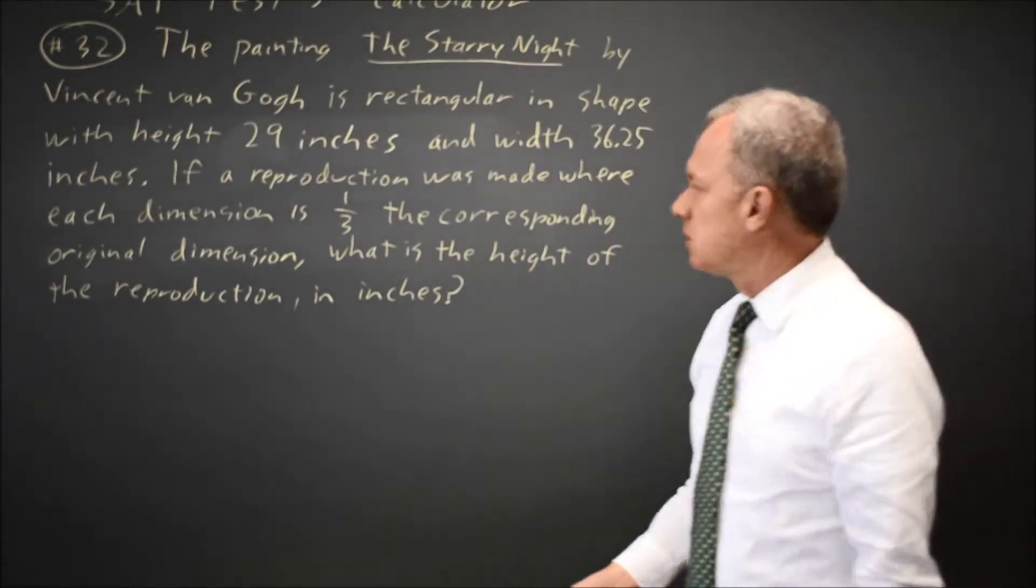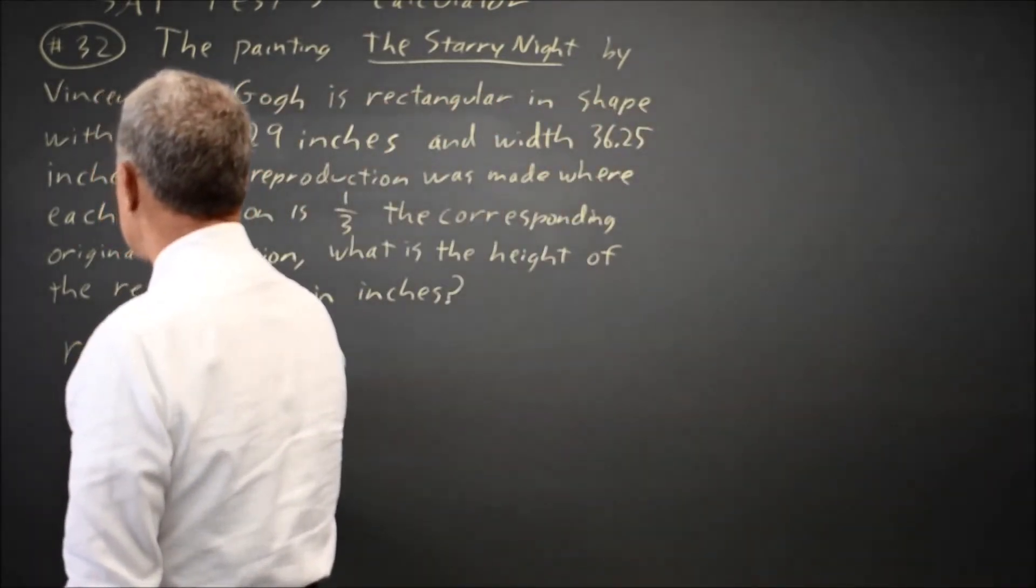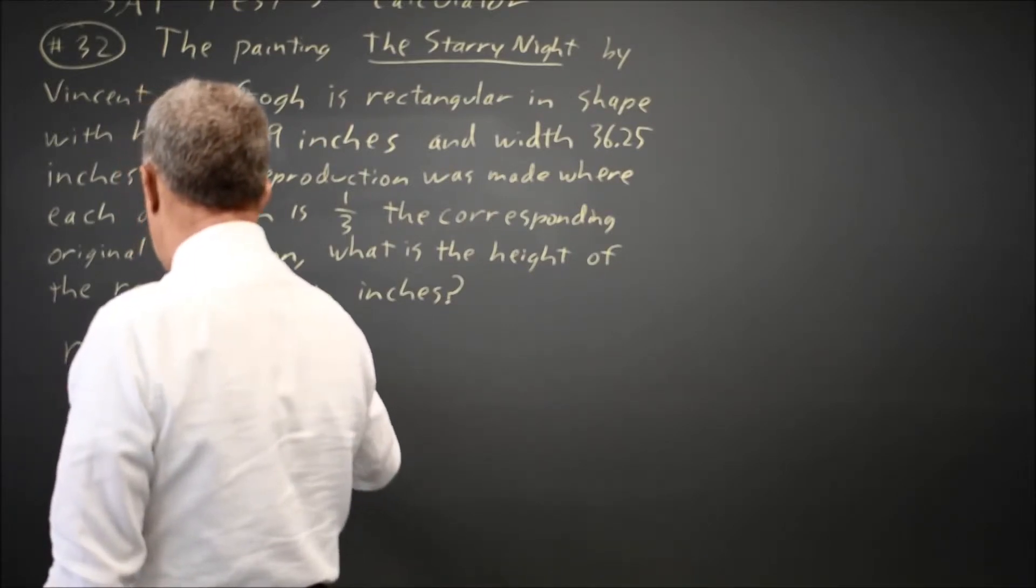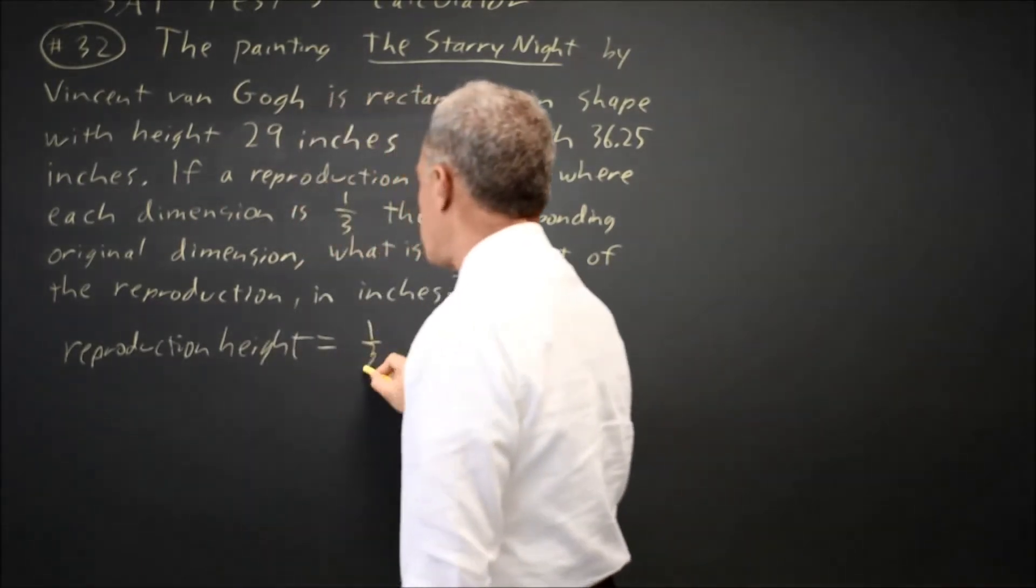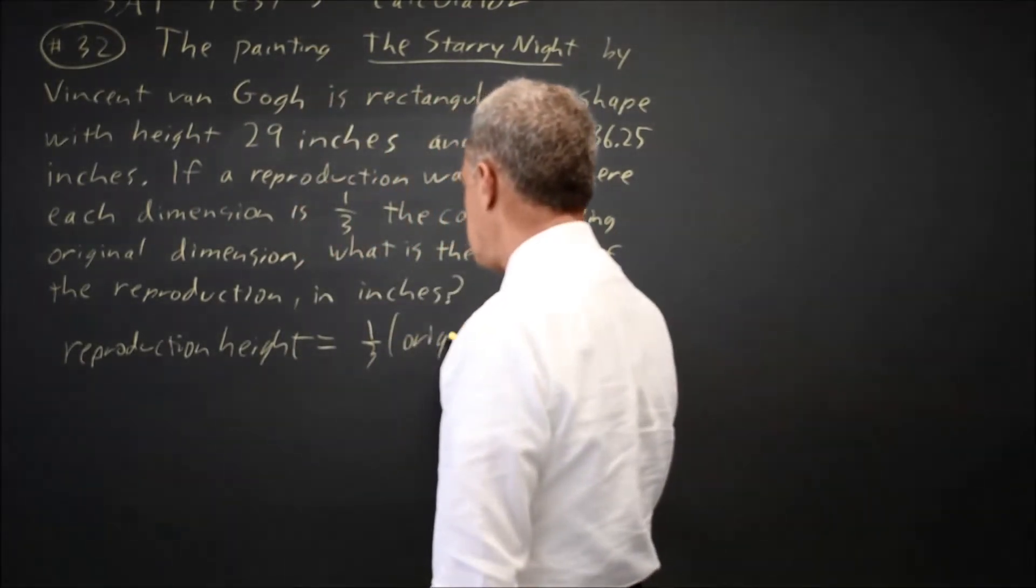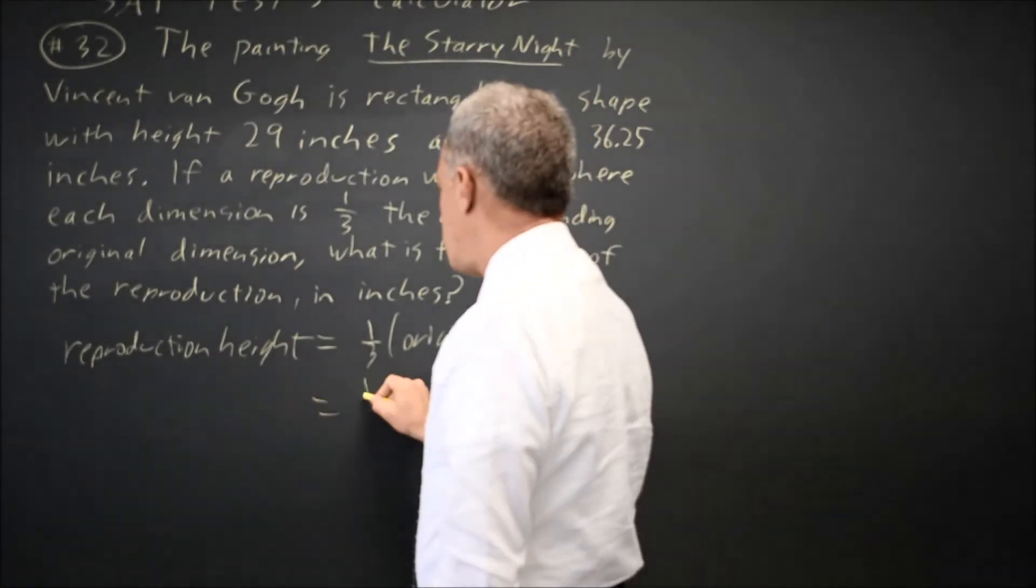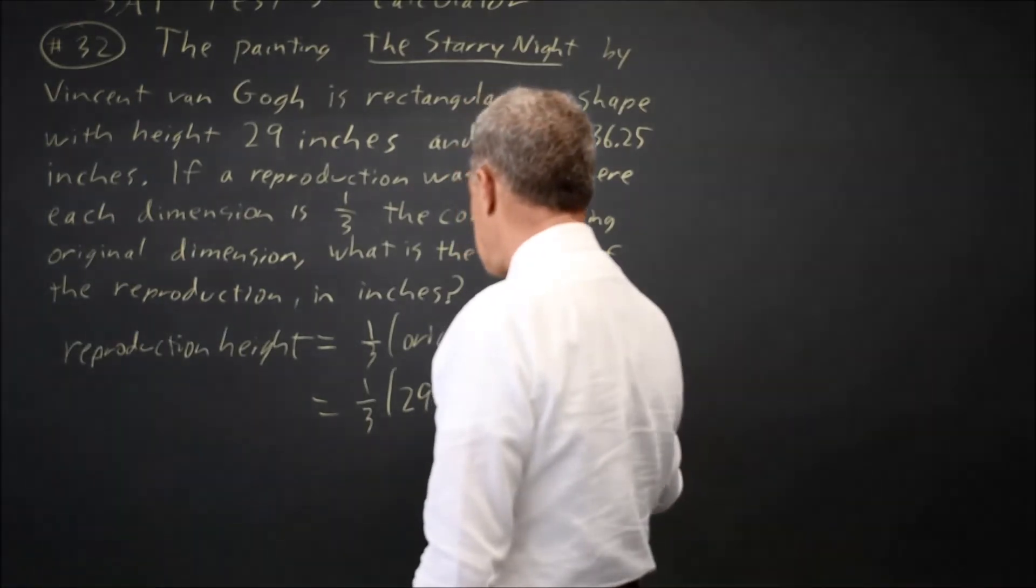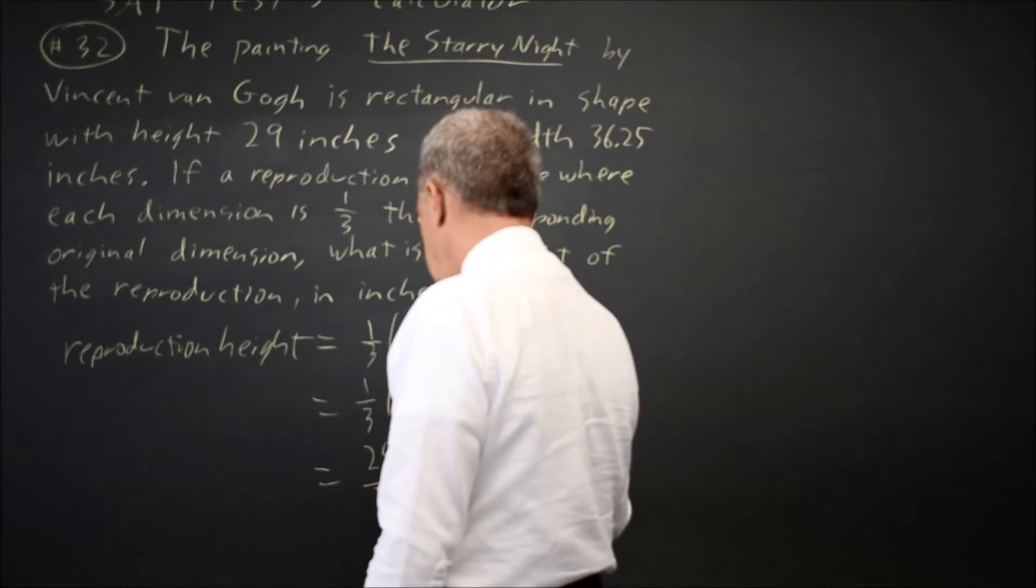So the reproduction height is equal to one-third of the original height. That is one-third of 29 inches, which is 29 over 3 inches.